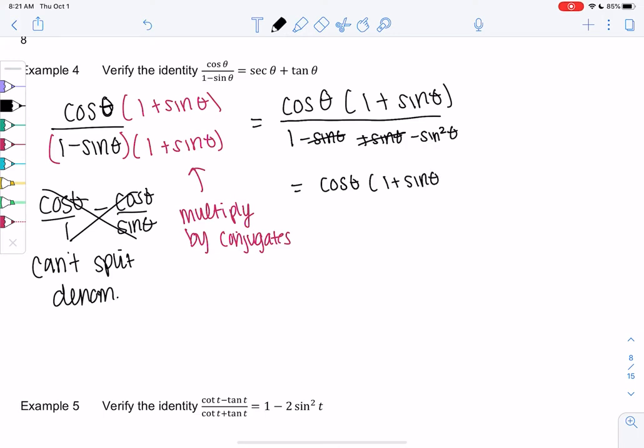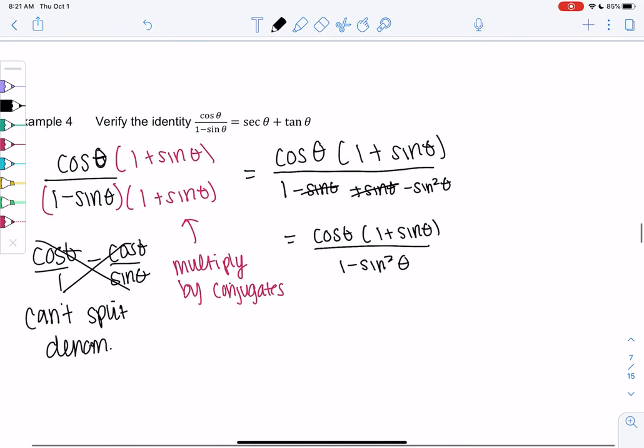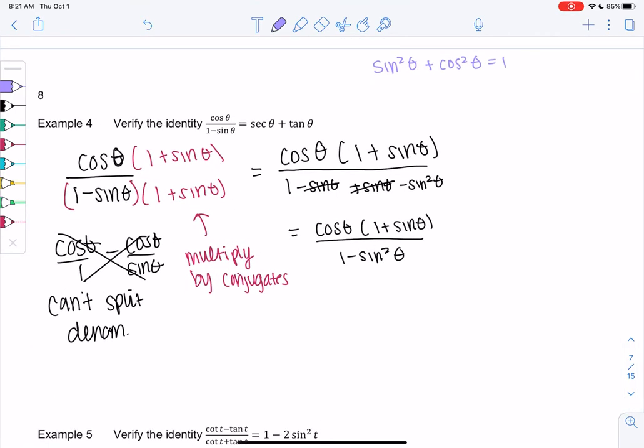I'm going to go back to our Pythagorean identity: sine squared plus cosine squared is one. I can subtract sine squared, so cosine squared is one minus sine squared, or sine squared is one minus cosine squared. These would be useful identities to be familiar with.